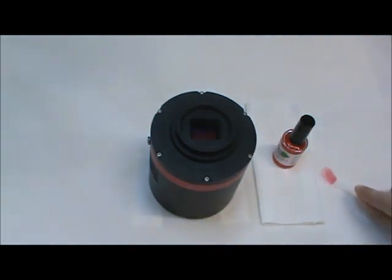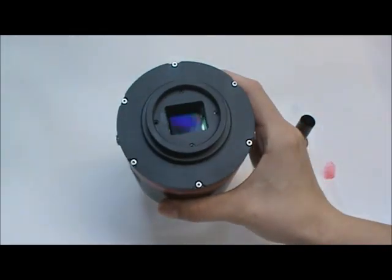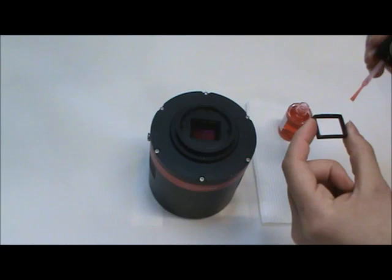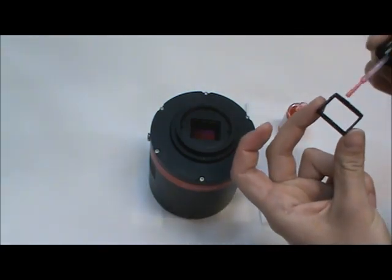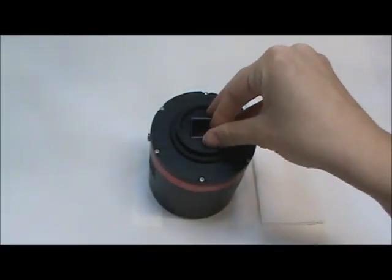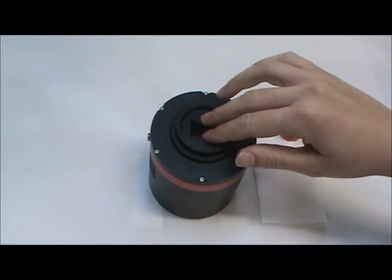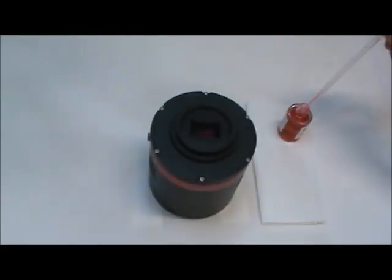If you are using a dam coat the bottom of the dam with a thin layer of polymer. Allow to dry for 30 seconds and apply another layer. Wait 30 more seconds then gently press the dam to your cover glass. Using a pipette apply the polymer to inside the dam and spread to the inner edge of the dam. Allow to dry thoroughly at least one hour at room temperature.